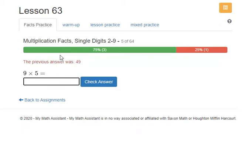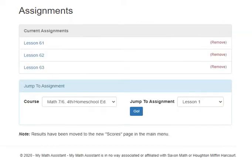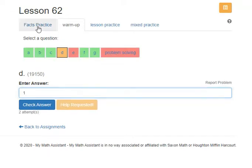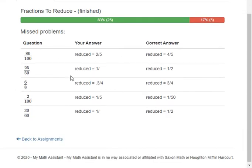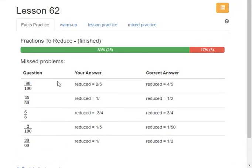After they have finished the facts practice, I'll show you what that looks like if I go to Lesson 62. So this student has finished the facts practice for Lesson 62. It shows you your score. They got 25 correct, 5 incorrect, and it also shows them the problems that they missed and what the correct answers were. So again, they can correct their understanding, hopefully get them right the next time they come across that same facts practice.